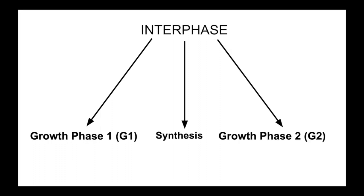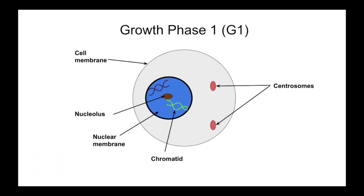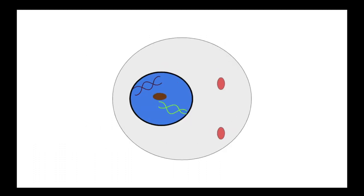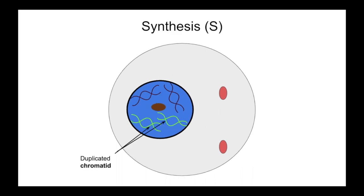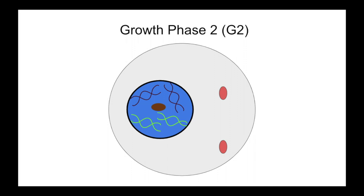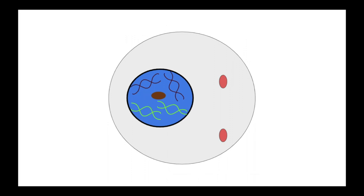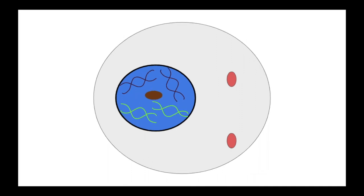The process begins with the three steps of interphase. Growth phase 1 increases cell mass while cytoplasmic organelles duplicate and the cell prepares for division. Synthesis phase involves DNA synthesis and chromosomes becoming replicated. The second growth phase involves protein synthesis, error correction of the duplicated chromosome, and another size increase.